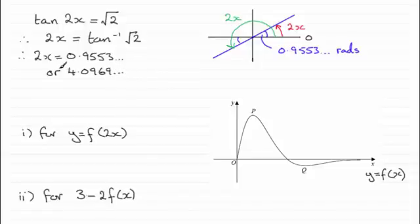Now I need to divide both of these answers by 2 to give me x. So we therefore have x equals 0.4776 and so on. And if you divide 4.0969 by 2, you end up with 2.048 and so on. So these correspond to the x coordinates of p and q. P is this first coordinate, and 2.048, because it's greater than that value, corresponds to the x coordinate of q.